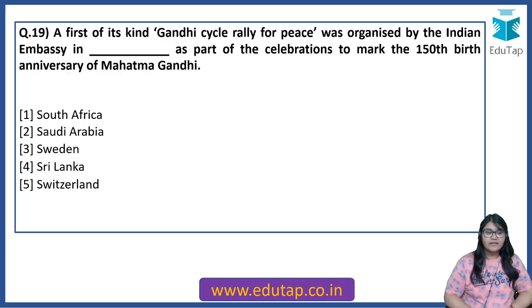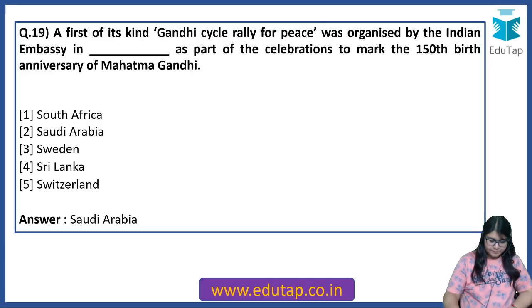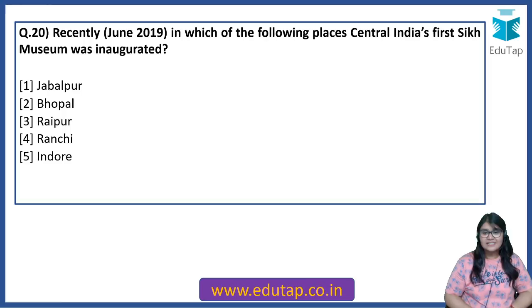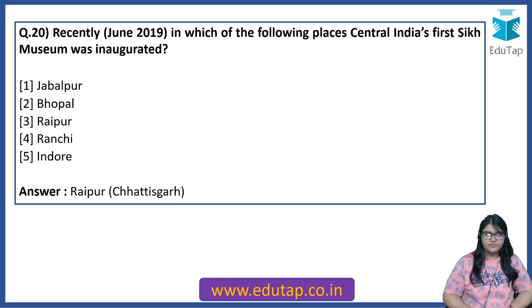A first-of-its-kind Gandhi Cycle Rally for Peace was organized by the Indian Embassy as part of celebrations to mark the 150th birth anniversary of Mahatma Gandhi — the answer is Saudi Arabia. Recently in June 2019, in which of the following places was Central India's first Sikh Museum inaugurated? The answer is Raipur, Chhattisgarh.